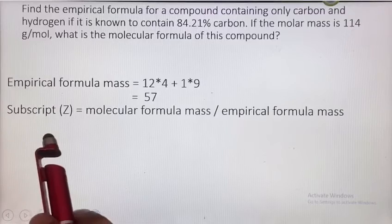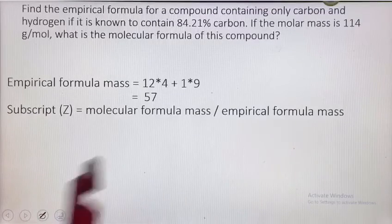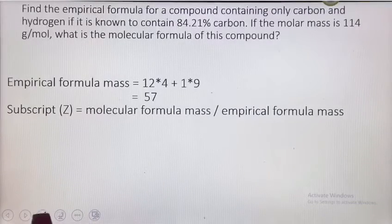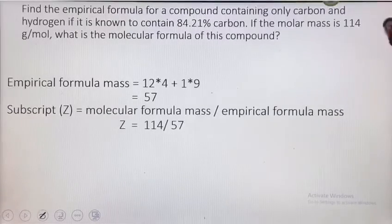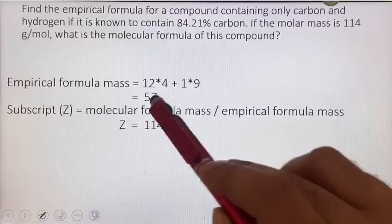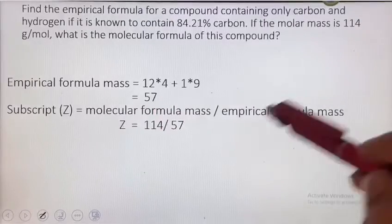Subscript Z equals molecular formula mass upon empirical formula mass. The molecular formula mass is given to us, which is 114, and the empirical formula mass is what we just calculated. We divide 114 by 57 and the answer is 2.